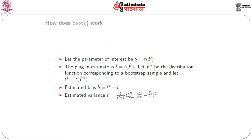Suppose we are interested in theta equal to t(f), which is an estimator based on f. The plug-in estimate of this function is t(f-hat), which corresponds to a bootstrap sample distribution function f-hat-star. We can get t-star, which is t(f-hat-star), as the estimate of t. The estimated bias becomes b-hat, which is t-star-bar minus t-hat, and the variance of the estimator is v-star, which is 1/(r-1) times the summation of (t-star minus t-bar-star) squared.